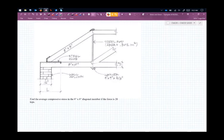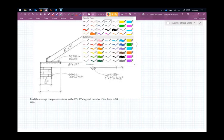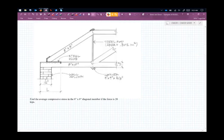The eight by eight diagonal member is this guy up here. We're going to start with this one. It's eight inch by eight inch, so the first thing we need... What are we trying to do? We're trying to find the average compressive stress.